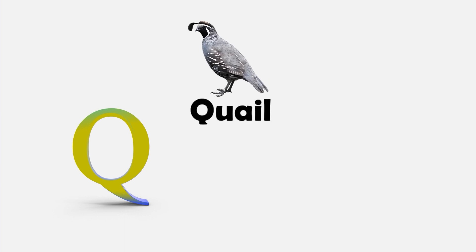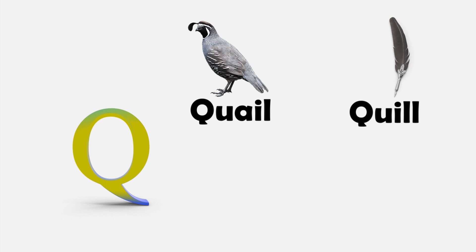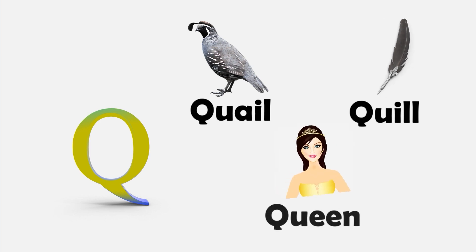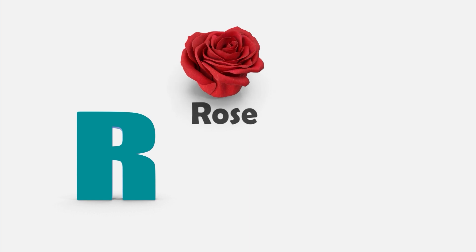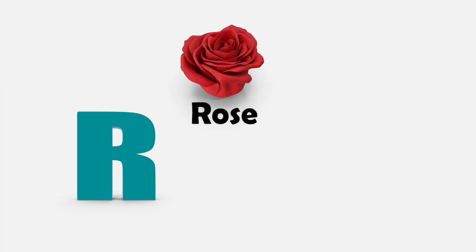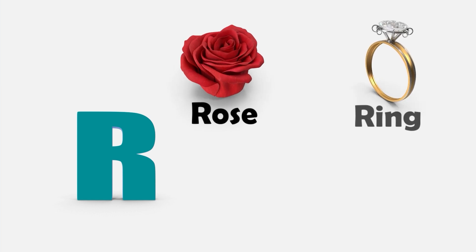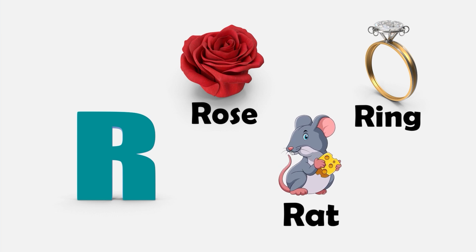Q — Q is for Quill. And Q is for Queen. R — R is for Rose. R is for Ring. And R is for Rat.